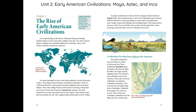Civilizations developed from Africa to the Americas. The earliest civilizations arose in fertile river valleys in Africa and Asia, flourishing along the banks of the Nile, the Indus, the Yellow, the Tigris, and the Euphrates Rivers. By 1,000 BCE, new civilizations arose in the Americas. These early American civilizations are called pre-Columbian civilizations, because they developed long before Christopher Columbus' first voyage to the Americas in 1492. Three of these pre-Columbian civilizations were the Maya, the Aztec, and the Inca.